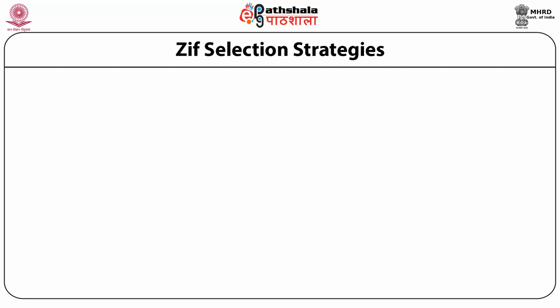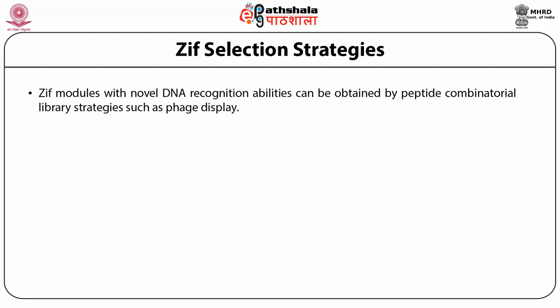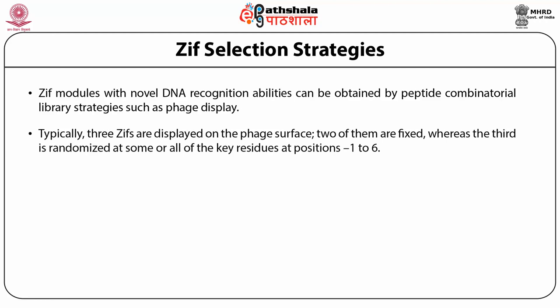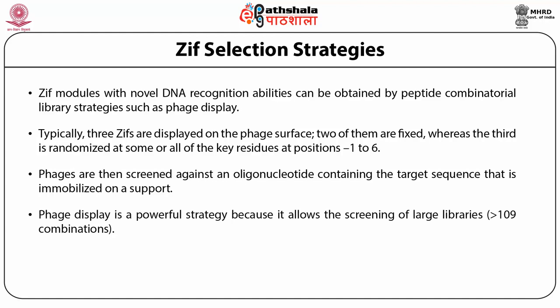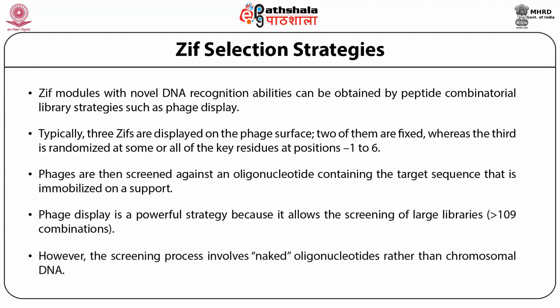Core repressors include Sin3 and NuRD complexes, which contain histone deacetylases that convert nucleosomes to a transcriptionally incompetent state. Zinc finger modules with modular DNA recognition abilities can be obtained by peptide combinatorial library strategies such as phage display. Typically, three zinc finger proteins are displayed on the phage surface: two are fixed whereas the third is randomized at some or all of the residues at positions 1 to 6. Phages are then screened against an oligonucleotide containing the target sequence immobilized on a support. Phage display is a powerful strategy because it allows the screening of large libraries, though the screening process involves naked oligonucleotides rather than chromosomal DNA.